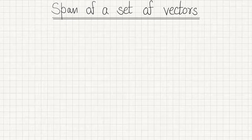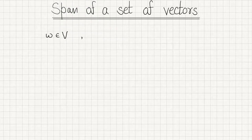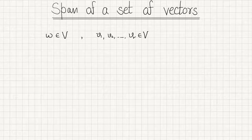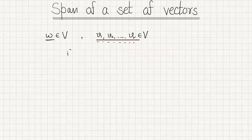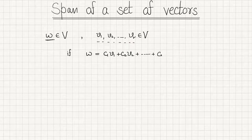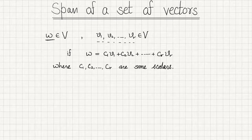In this video we will discuss the span of a set of vectors. Let me recall some stuff we have already discussed — linear combinations of vectors. Suppose you have any element w in a vector space V, and some vectors v1, v2, ..., vr in V. We say that w is a linear combination of these vectors if we can write w using scalars c1, c2, ..., cr.